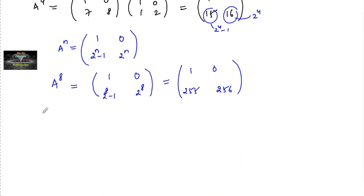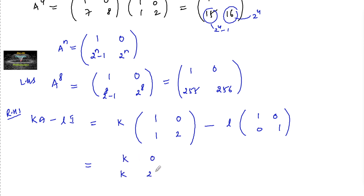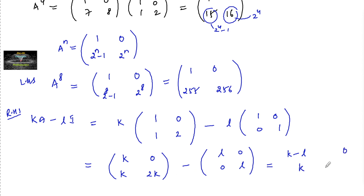Now let's expand the RHS: kA − lI equals k times [[1,0],[1,2]] minus l times [[1,0],[0,1]], which gives [[k,0],[k,2k]] minus [[l,0],[0,l]], resulting in [[k−l, 0],[k, 2k−l]].